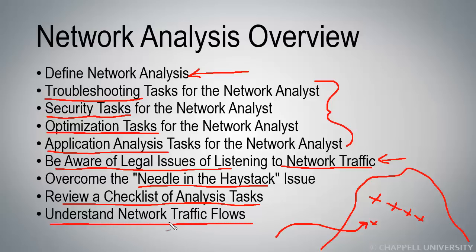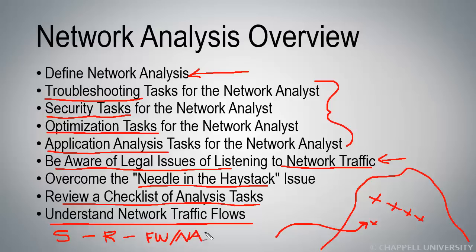In this last section, I'll be showing you how traffic flows through a switch, how traffic flows through a router, and how traffic flows through a firewall that is also acting as a network address translation box. I'll be opening up trace files from each side of a switch, then from each side of a router, and then from each side of a firewall and natting device.